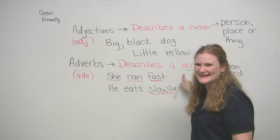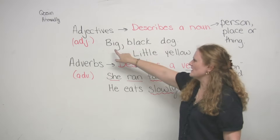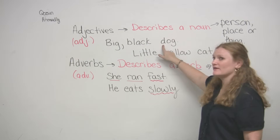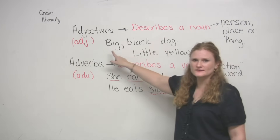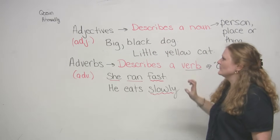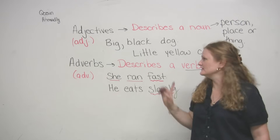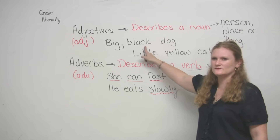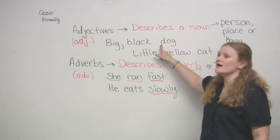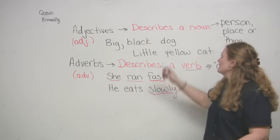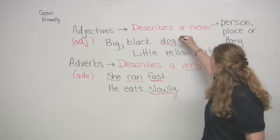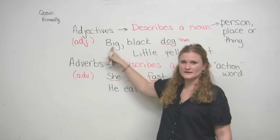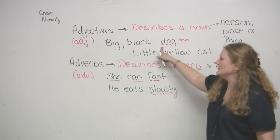Let's look at this sentence: 'We have a big black dog.' Can anyone tell me where my noun is? Is 'big' a noun? No. Is 'black' a noun? No. 'Dog' is a noun. So in this sentence, 'dog' is my noun. The words 'big' and 'black' describe my noun — they are adjectives that tell you what the noun looks like.